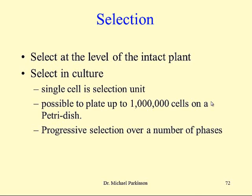Now it's possible to do this, but it's very labour intensive and takes a long time. In culture, the single cell is the selection unit, and it's possible to plate out a million cells or more on a Petri dish and select single cells from it. It's usual to carry out a progressive selection over a number of phases — we're not talking years, we're talking months. Under optimal conditions, it's possible to get a transgenic plant in a matter of weeks rather than over 20 years of selection as with the intact plant.